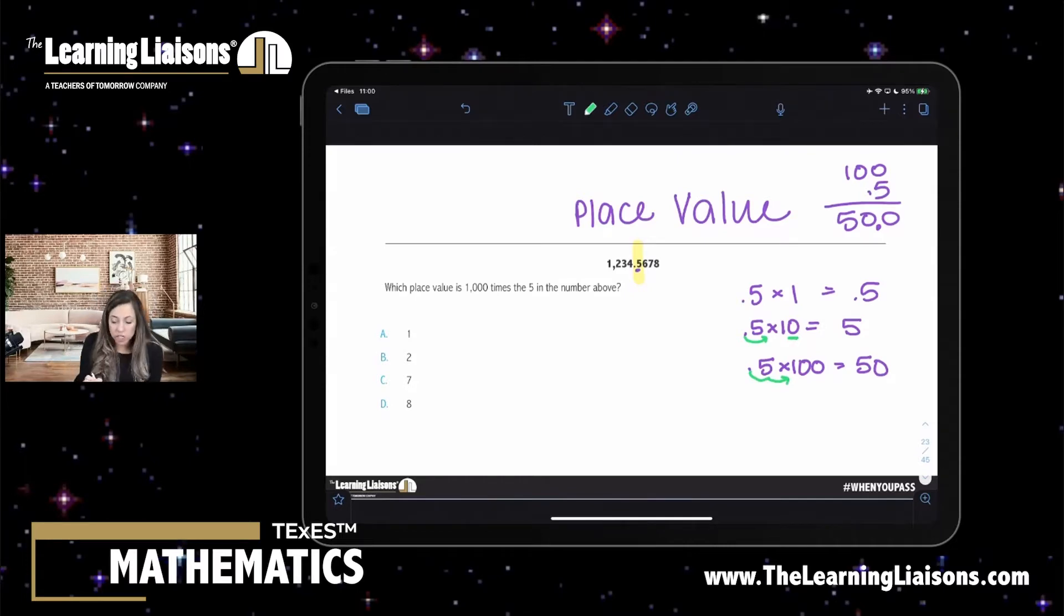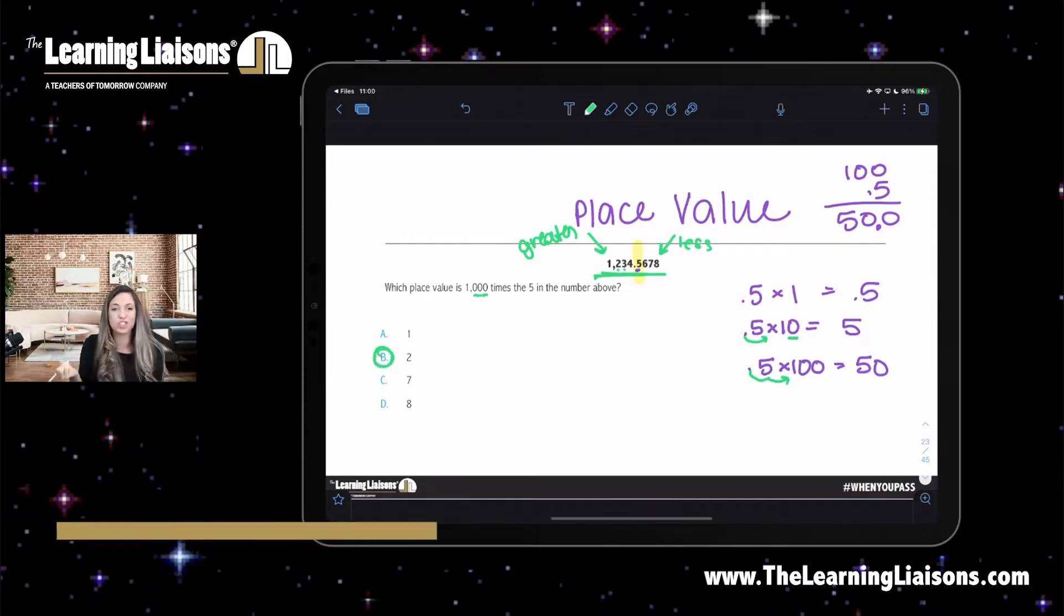So which of these is 1000 times 5? Which is going to be a place value that's greater. These are less and these are greater. So if I'm looking for the place value that's a thousand times, I'm going to move my decimal three places. Or I'm going to look for the place value that is three places to the left. One, two, three is going to be two.